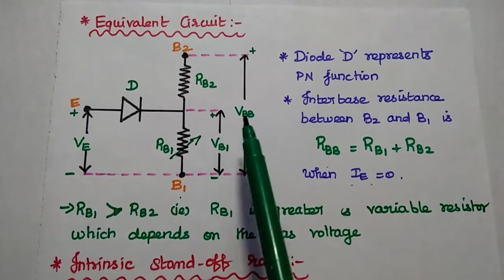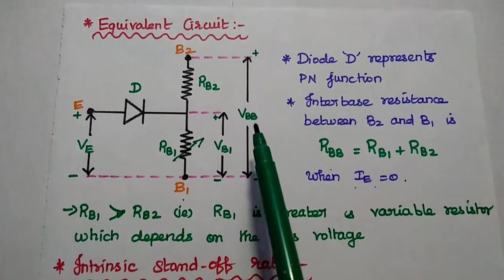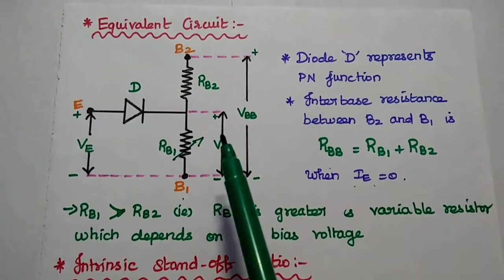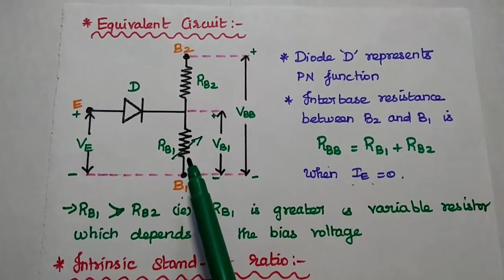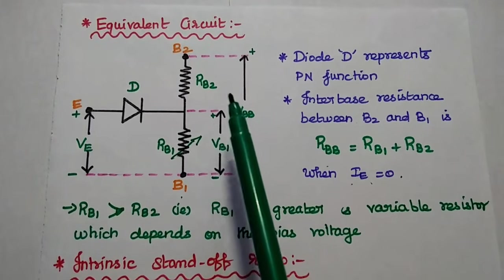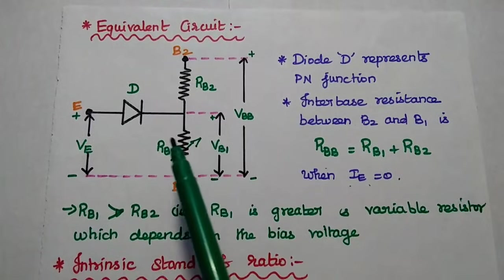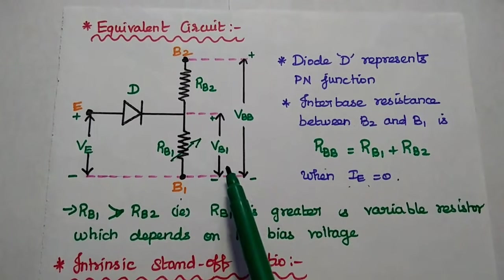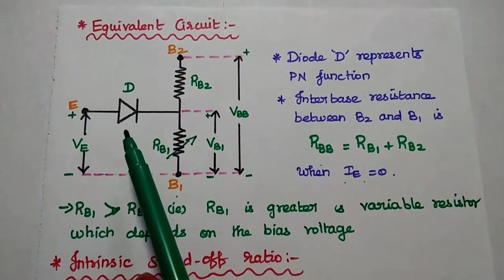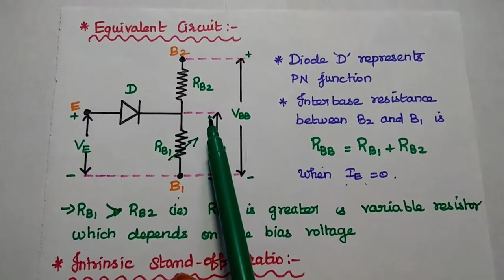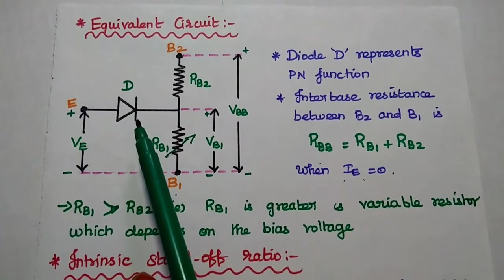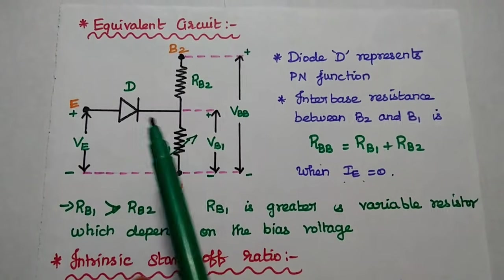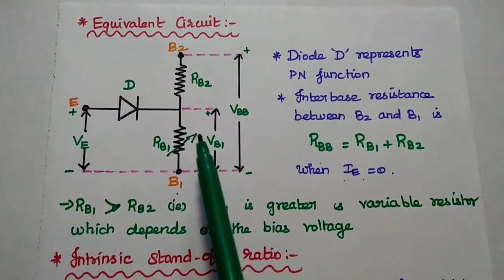If we apply only the VBB supply voltage between B1 and B2, there is a voltage drop across RB1 as well as RB2. The voltage drop across RB1 is a very important factor because this voltage is going to reverse bias the diode. Here the terminal is positive and the other is negative, so VB1 is going to reverse bias this diode.